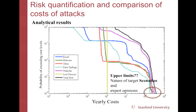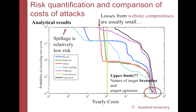We can quantify with these curves the probability — the chances of exceeding different kinds of losses because of different kinds of attacks. We have analytical results for each of the types of attacks. The difficulty is looking at what's happening in the upper bound, the worst case, where we need expert opinions. The yellow line shown here is the probability of exceeding a million dollar loss by each type of attack — that came out of the work of Marshall Kuypers. What you can see is that losses from website compromise are usually small, but can get very, very big, and we need to look more carefully at the mechanism.